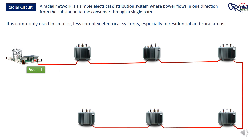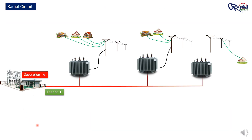The path from the source to the load is unidirectional. In a radial network, power is supplied from the substation to all the distribution transformers through a single feeder. In this layout, under normal conditions, everything works perfectly and electricity flows smoothly to the consumer.